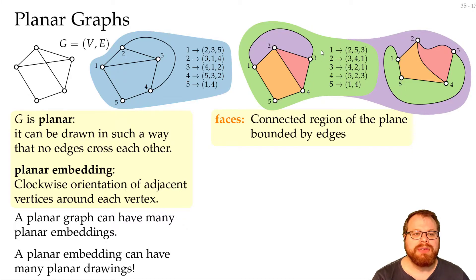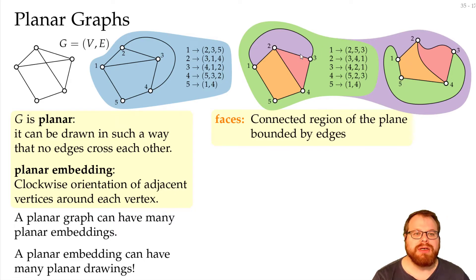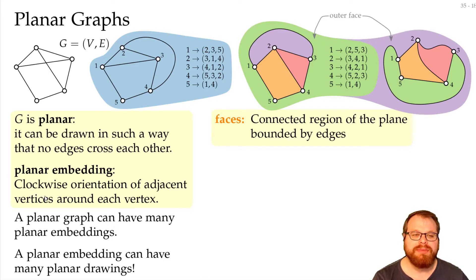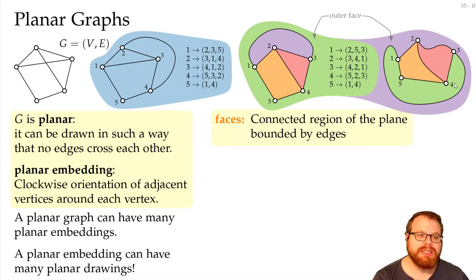There is something you probably realize that is slightly different. Among the regions we have, there is always one unbounded region, which is the so-called outer face. In these two different drawings of the same combinatorial embedding, the outer face is different. On the left, the green is the outer face; on the right, the purple is the outer face.